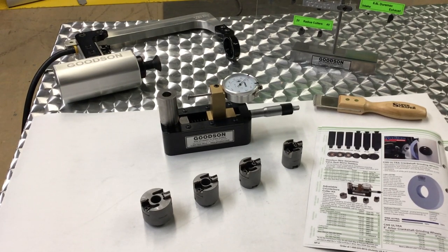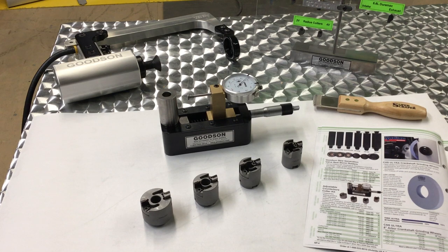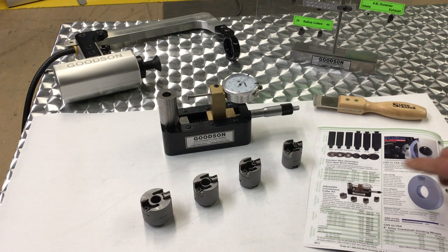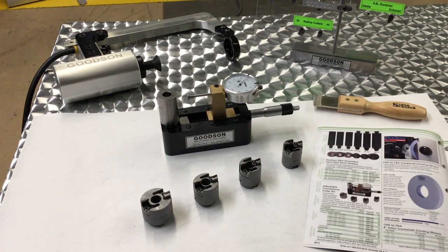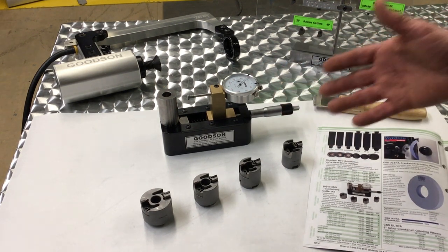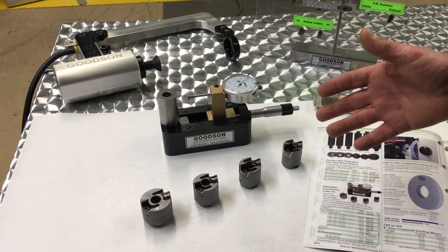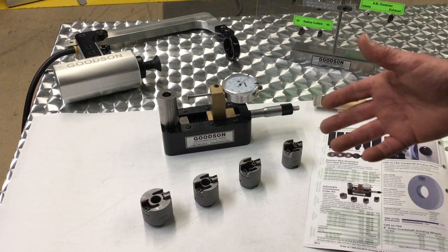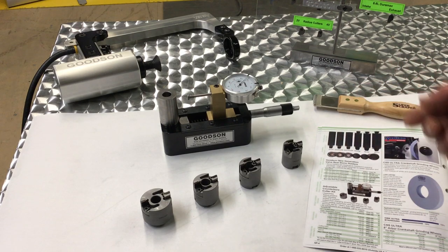Hello everybody, Dave Monahan here once again with Goodson Tools and Supplies. Today I'd like to tell you about our DWA 300, this is our adjustable counterbore kit. When it comes to the interference fit for the different seat rings you're putting in, whether it be a metric application or the more popular diesel applications that are coming through the machine shop right now.